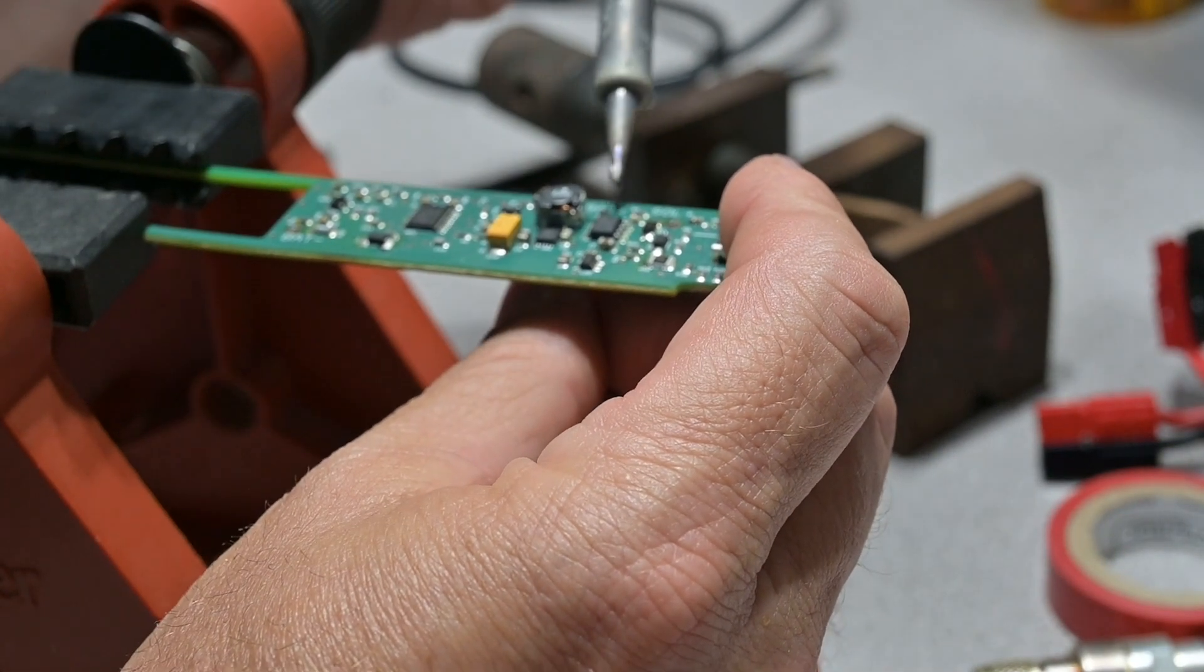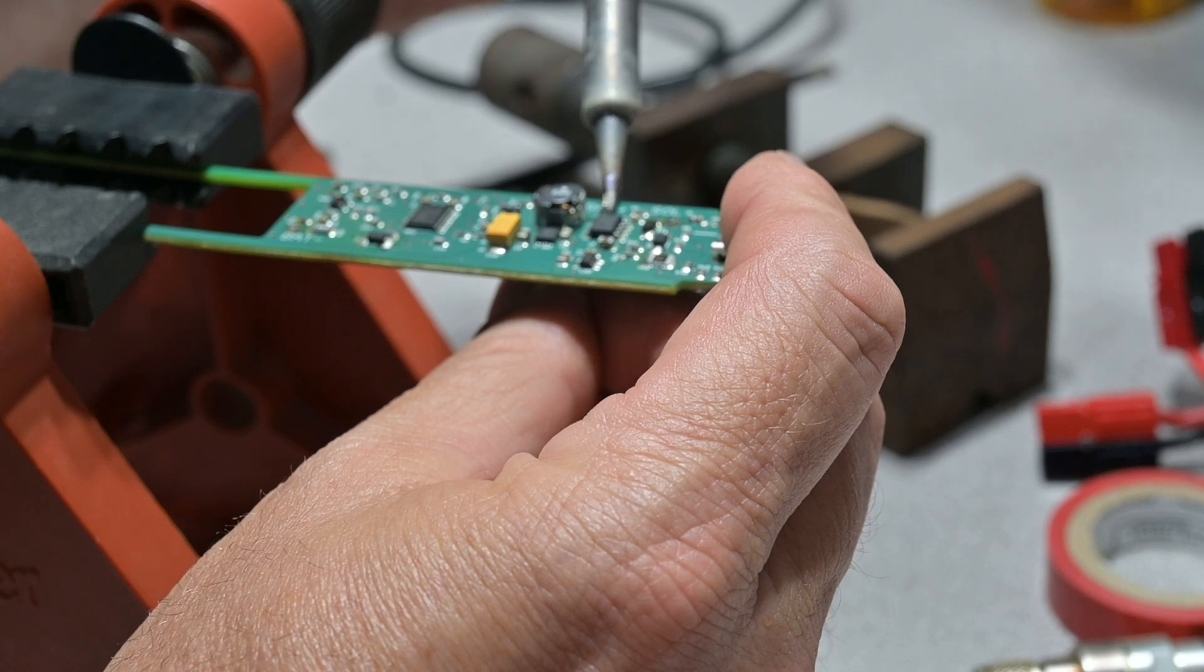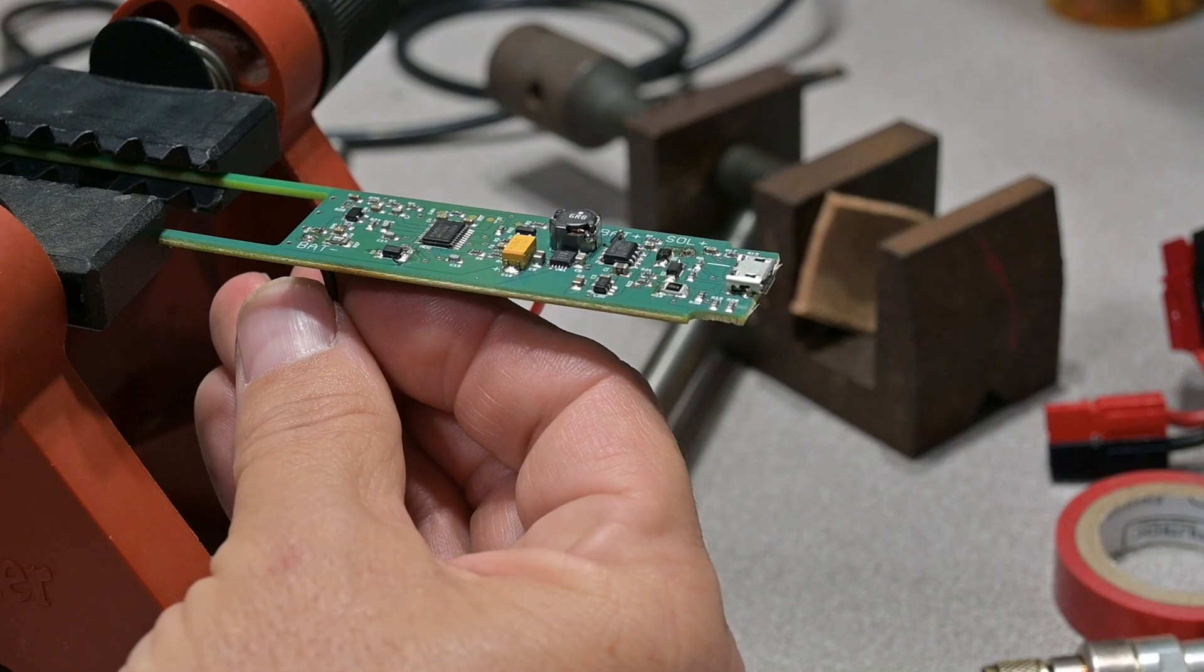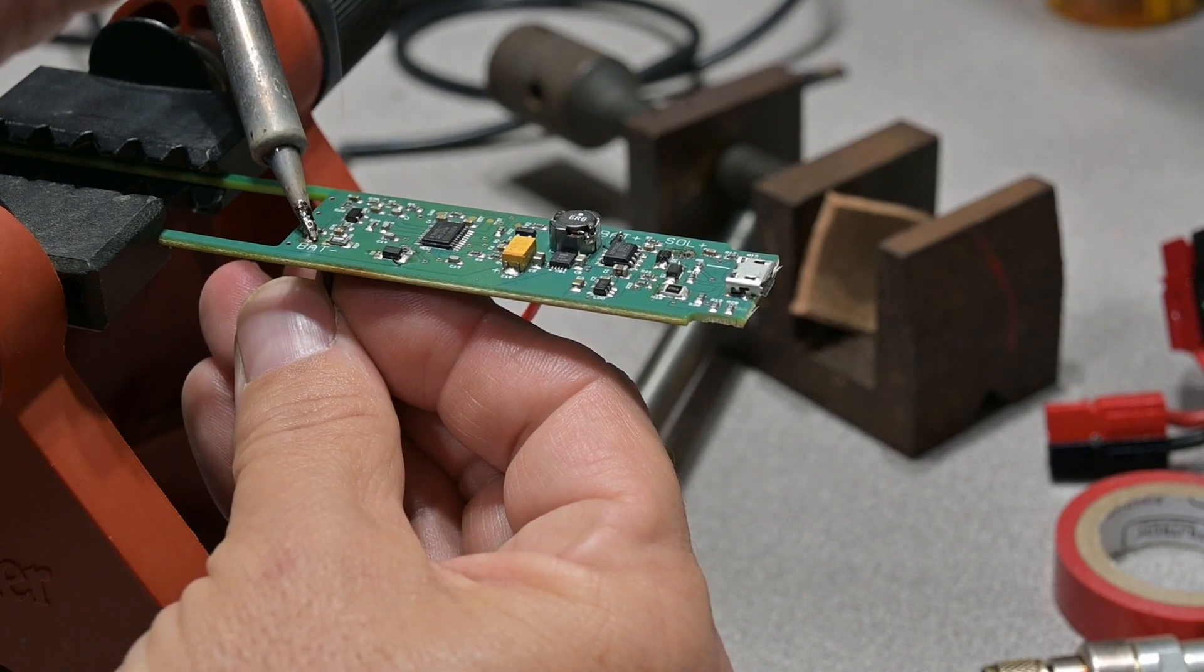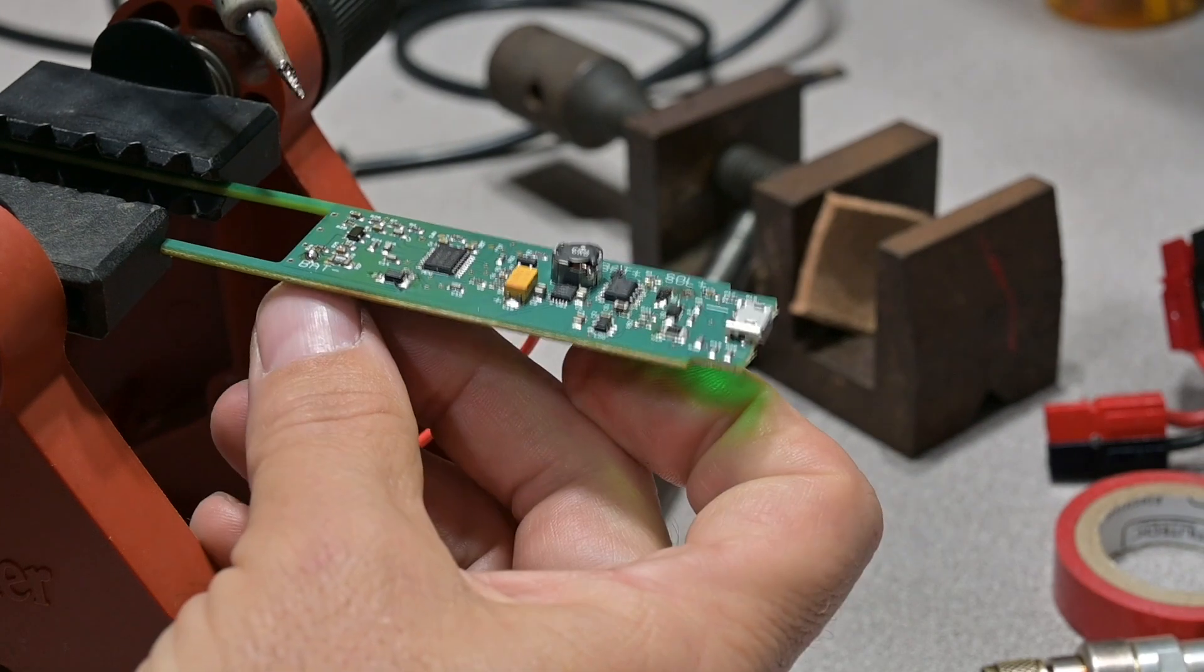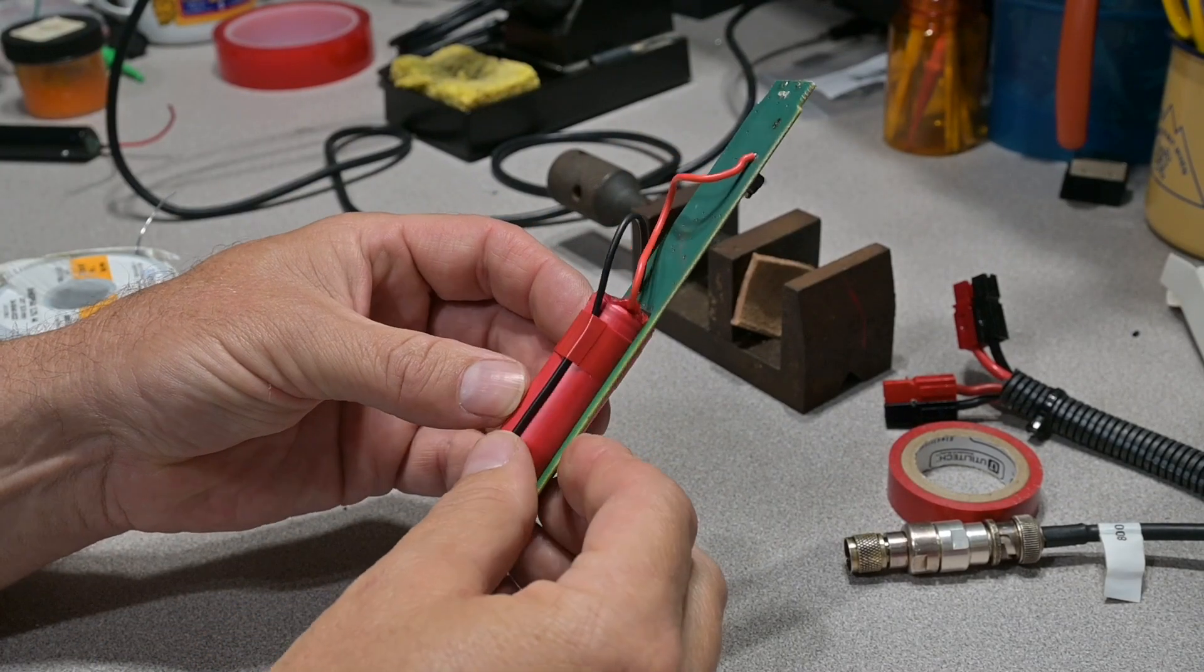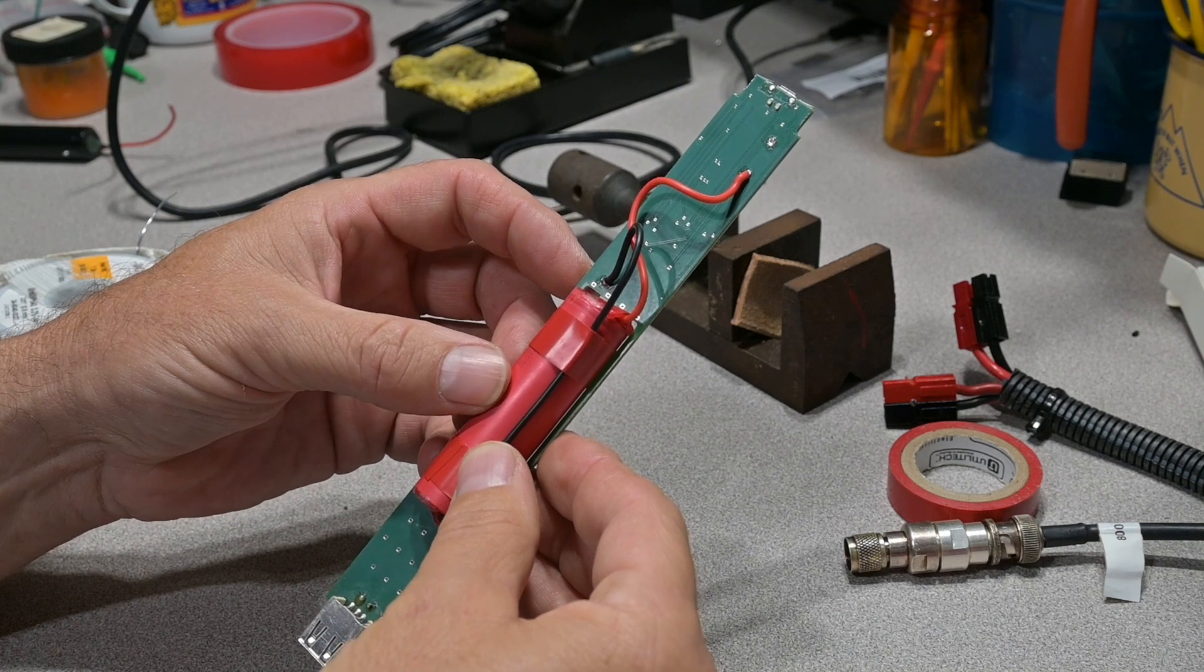Now switch gears and reconnect your battery. So now our new battery is installed and we're ready to put this back in the tube and reconnect our solar panel.